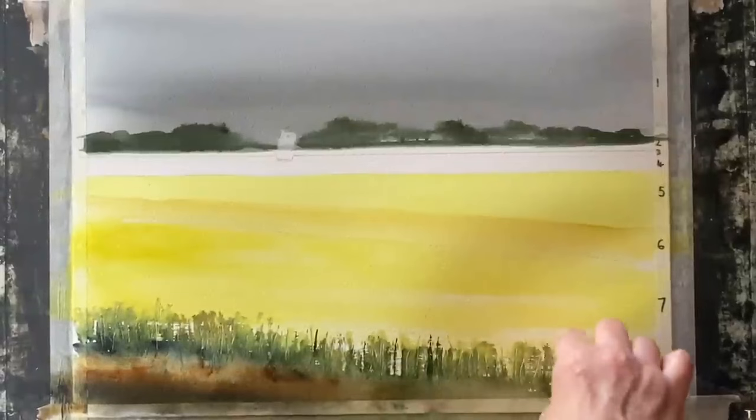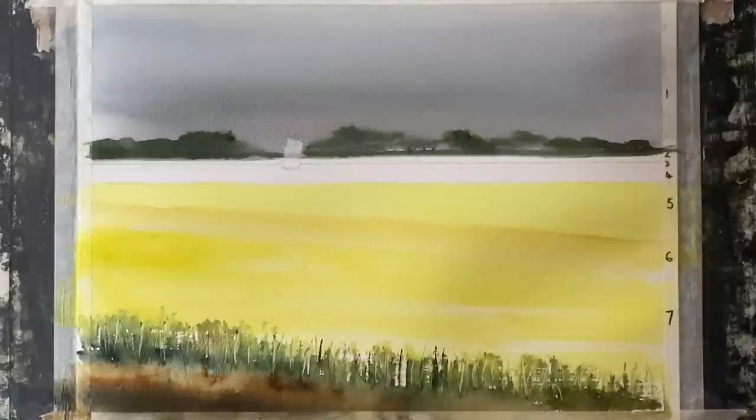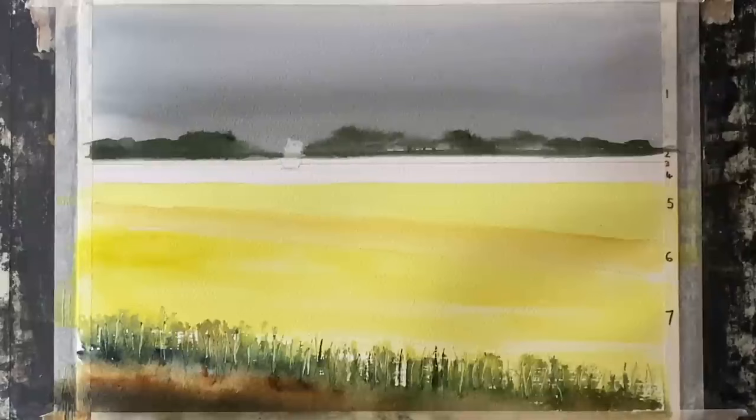Now scraping out with the corner of a plastic card a few more vertical marks to suggest the stems of the canola flowers on the field edge.